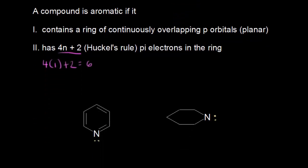Here's the dot structure for pyridine. Starting with the carbons: pyridine has five carbons, each with a double bond to it, so each carbon is sp2 hybridized, meaning there's a free p orbital on each of those five carbons. I'll sketch in those p orbitals on the five carbons. Now let's analyze the nitrogen and figure out its hybridization using the steric number, which equals the number of sigma bonds plus the number of lone pairs of electrons.